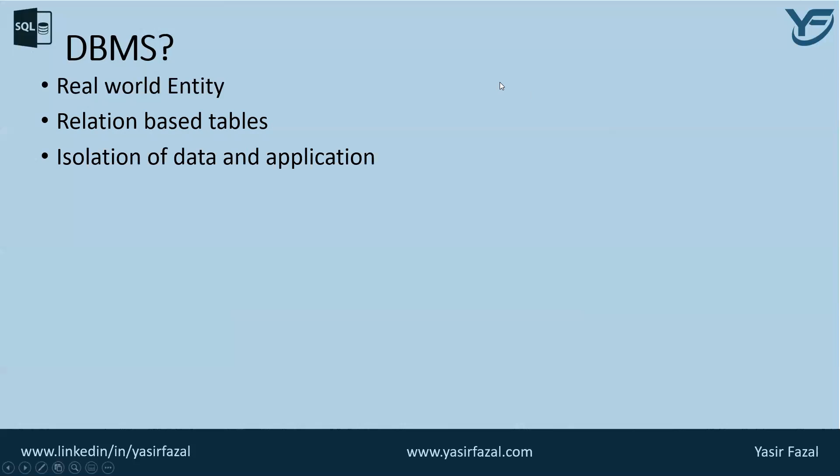Next is isolation of data and its applications. The database system is entirely different from its data. A database is an active entity whereas data is said to be passive, on which the database works and organizes. DBMS also stores various kinds of metadata, which is data about the data, to ease its own processes.